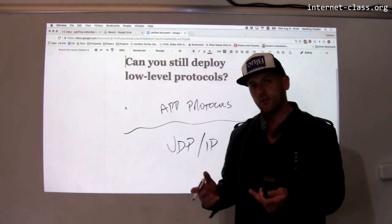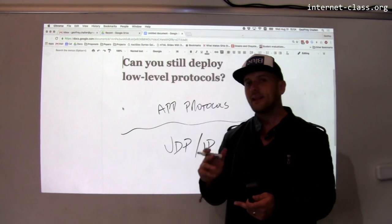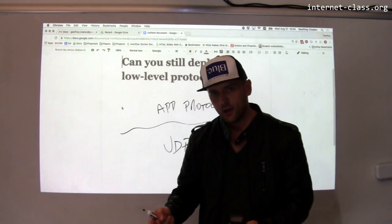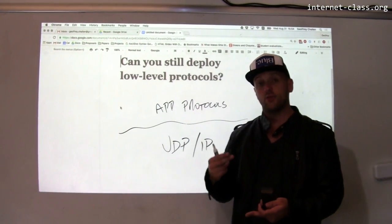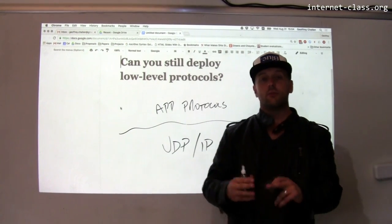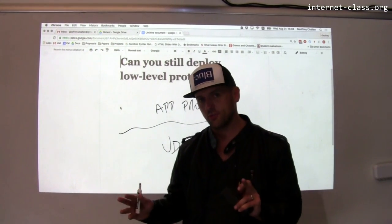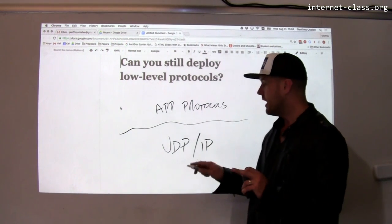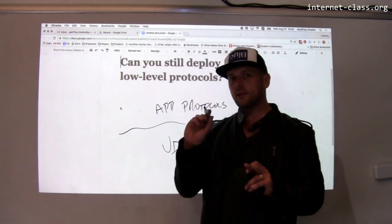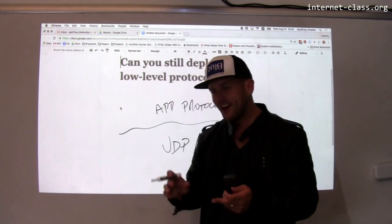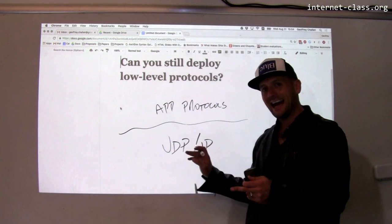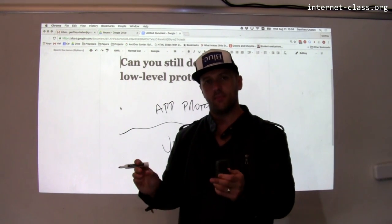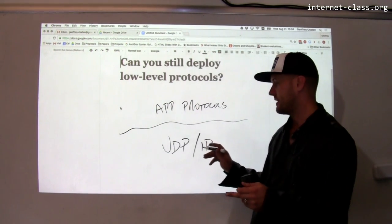UDP is the Universal Datagram Protocol. Unlike TCP, UDP does not provide reliability, does not provide ordering, and doesn't do any sort of congestion control — so those features are missing from UDP. However, UDP does preserve some of the addressing that TCP adds to IP, which is important to allow services to work over the internet.